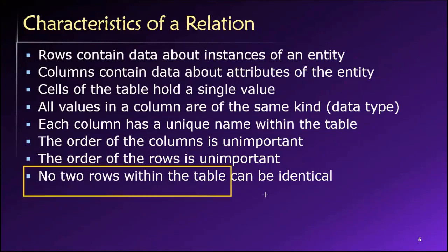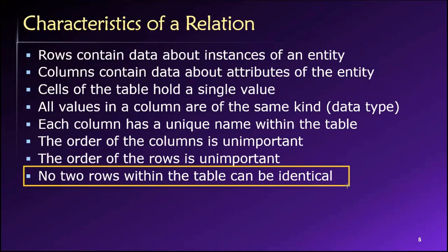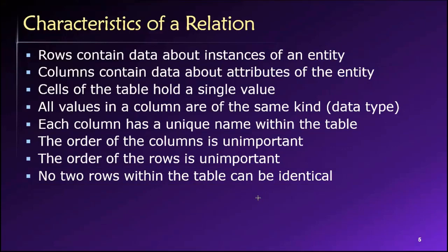And finally, no two rows within the relation can be identical. And what this means is that the combination of values across all the columns for a particular row must be unique. There must be something unique about each row that distinguishes it from every other row in the table.